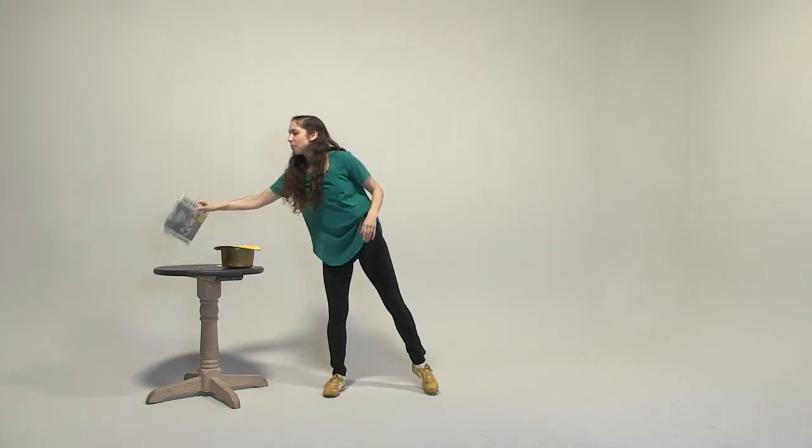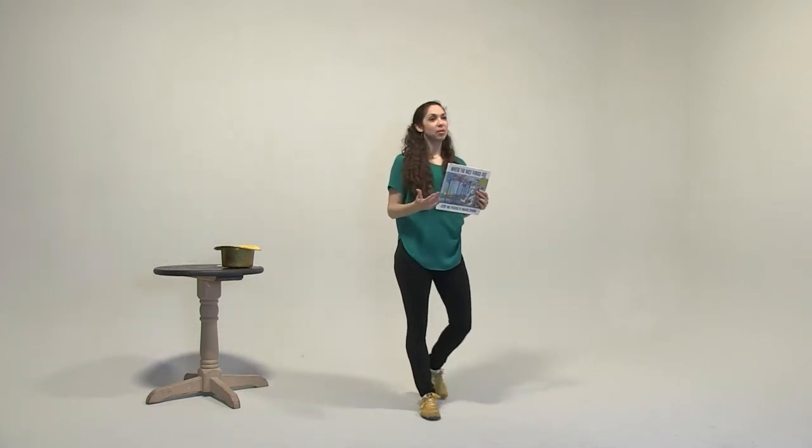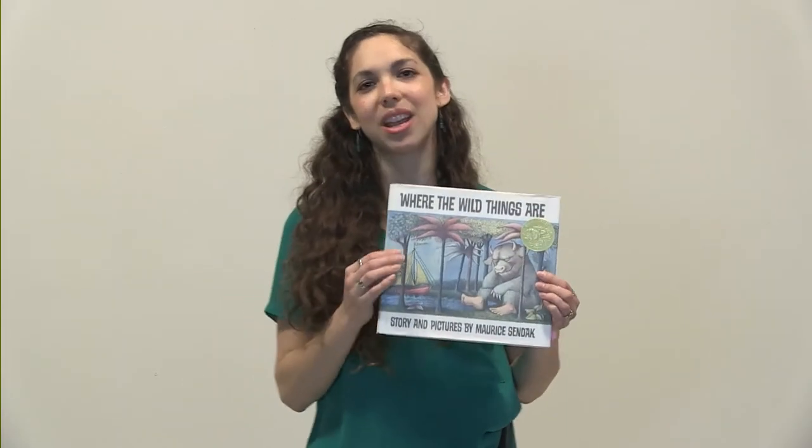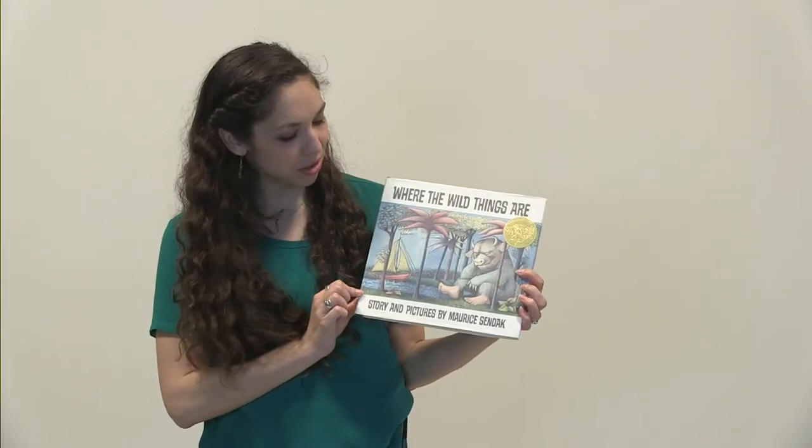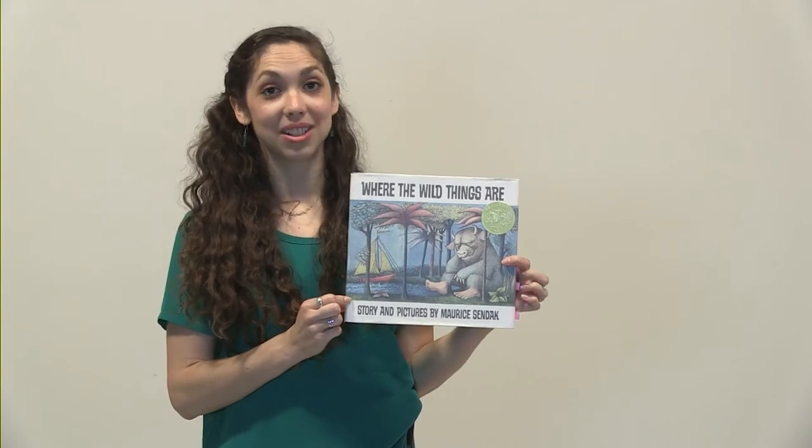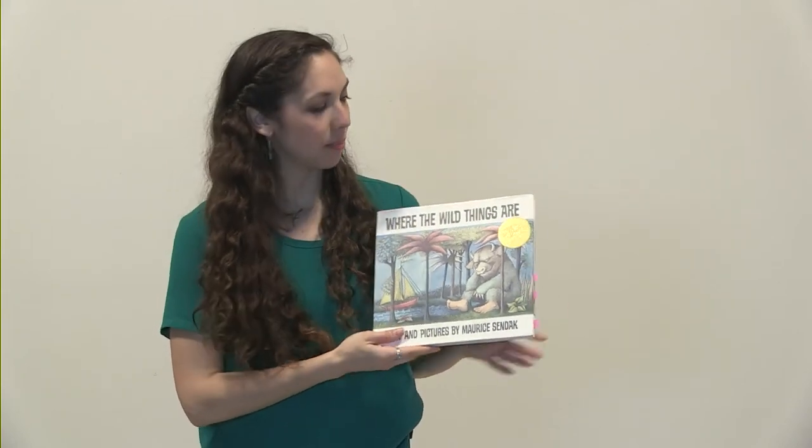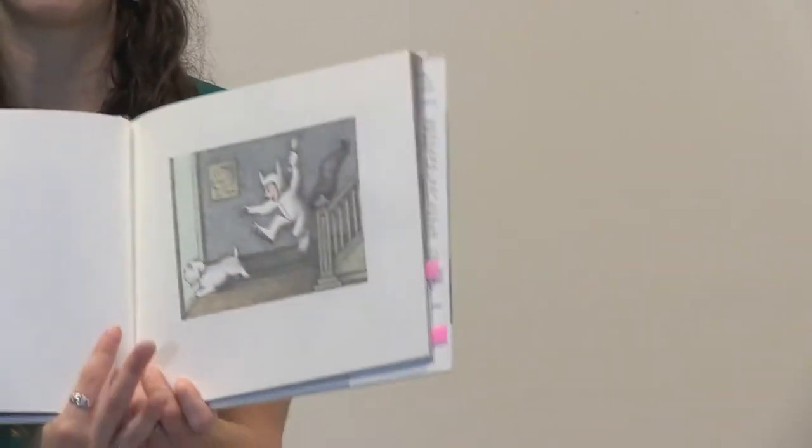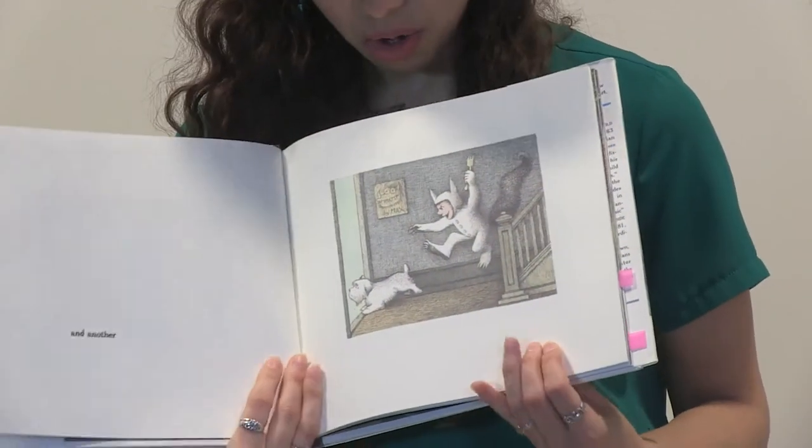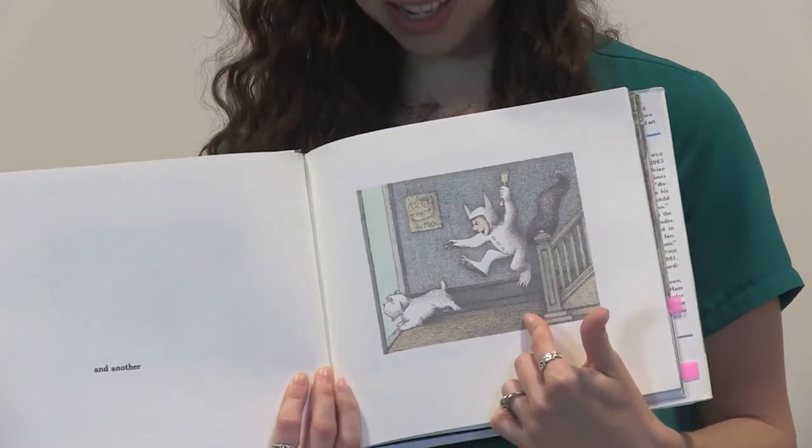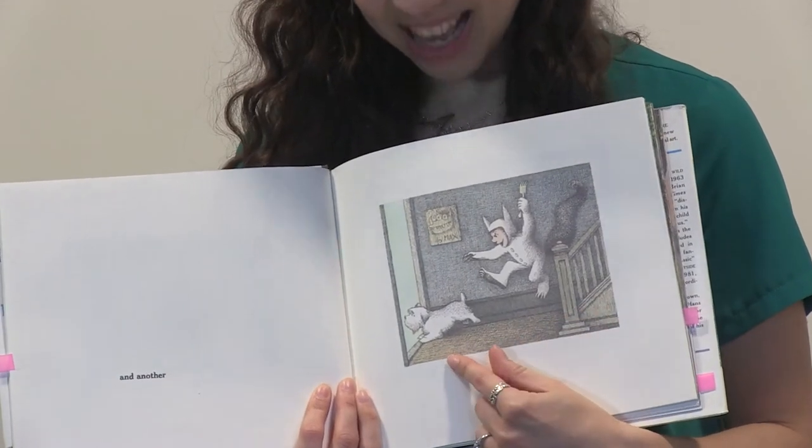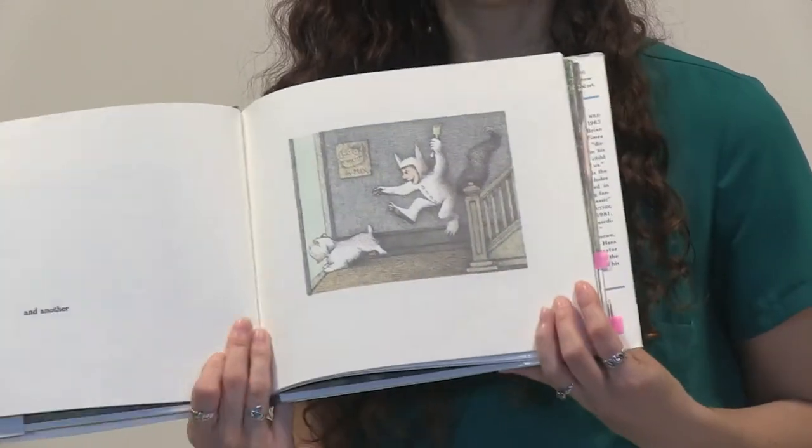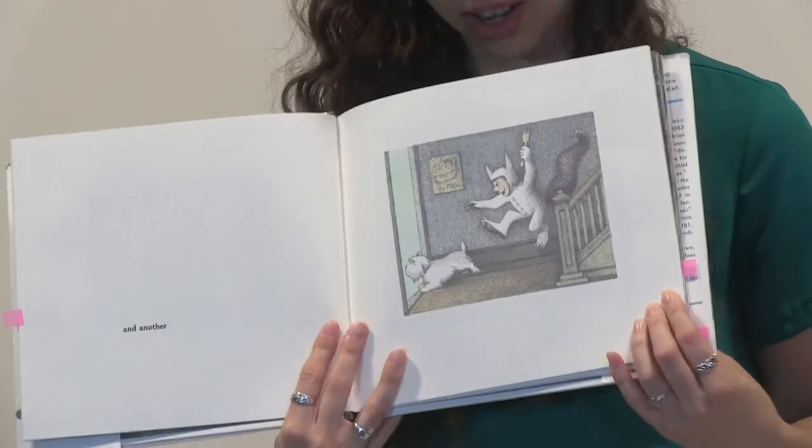All right, let's look at some characters in a book. We're going to use all of those kinds of energy to see if we can understand the characters we meet in Where the Wild Things Are by Maurice Sendak. On this page we meet two characters: we meet Max, the main character of this story, and his dog.